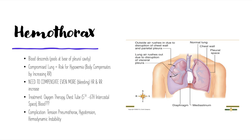Another treatment to consider in hemothorax is a blood transfusion, because the patient may be losing excessive blood leading to hemodynamic compromise or instability. We want to maintain the patient's oxygen levels — both their PaO2 and SaO2. The normal range for PaO2 should be between 80 and 95, and SaO2 should be above 95 percent.